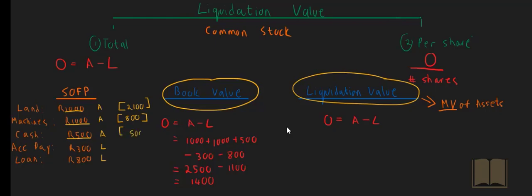Your cash stays the same at 500. Your accounts payable is still 300 and the long-term loan is 800. The liquidation value is thus equal to the market value of the assets, so it's 2,100 plus 800 plus 500 minus your liabilities of 300 and 800. This gives you a liquidation value, a total liquidation value of 2,300.